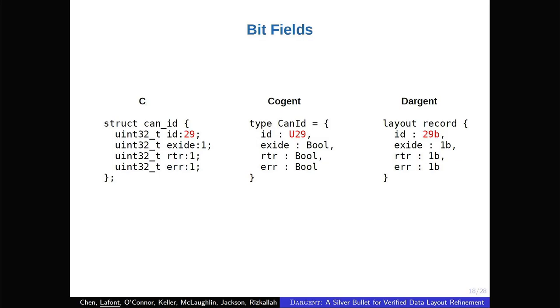And this is useful because actually Cogent relies on a library called auto-coress, which embeds C into Isabelle. And this kind of C structure with customized bit size cannot be, is not supported by auto-coress.